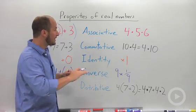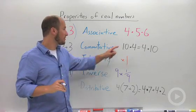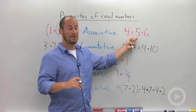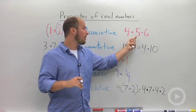The same thing holds true for associative for multiplying all the way across. We could do 4 times 5 first and then multiply by 6, or 5 times 6 and then multiply by 4. You're going to end up with the same thing.